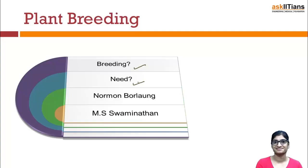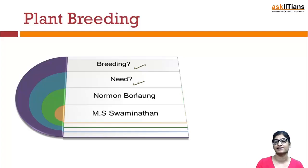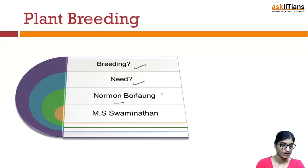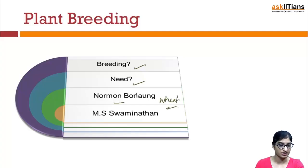Whenever we do something in biology, there is a need and objective for it. The need for plant breeding is for improving crop yield and crop quality. The scientist Norman Borlaug is very important here — he was a famous plant breeder from Mexico who proposed the dwarf variety of wheat and is known as the father of the green revolution.